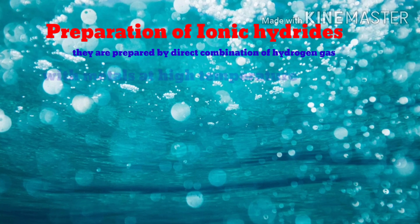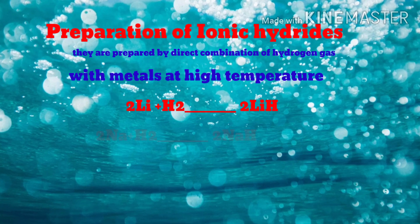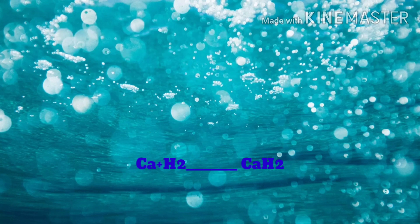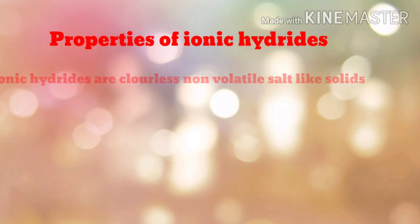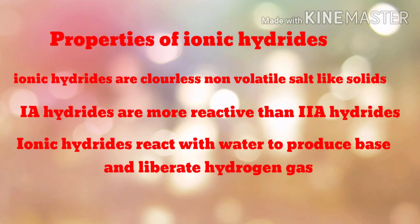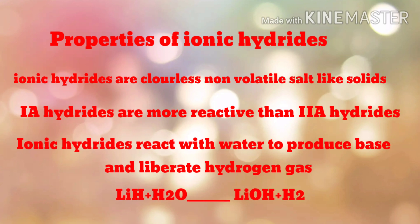Preparation of ionic hydrides: ionic hydrides can be prepared by direct combination of metals with hydrogen gas at high temperature. Sodium reacts with hydrogen gas to form sodium hydride, and calcium reacts with hydrogen gas to form calcium hydride. Ionic hydrides are colorless, non-volatile, salt-like solids. Group 1A hydrides are more reactive than group 2A hydrides.